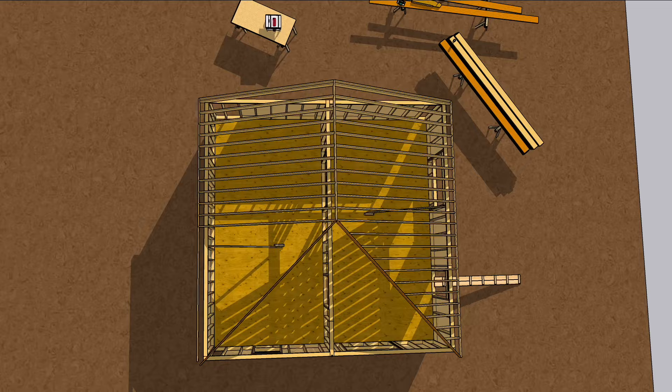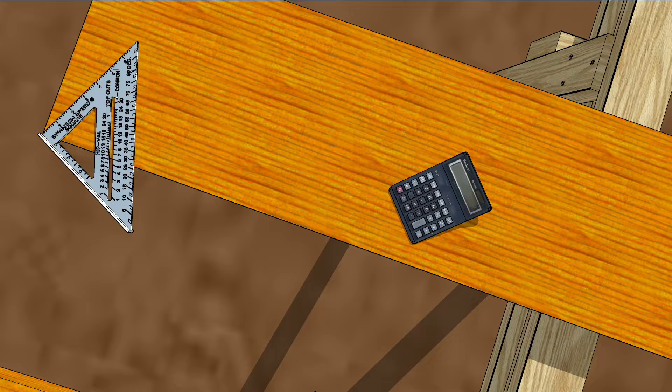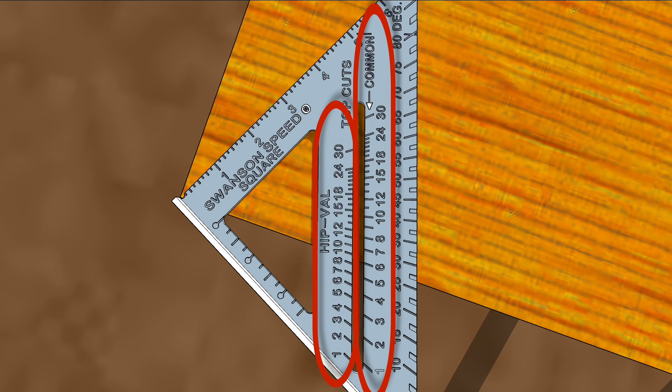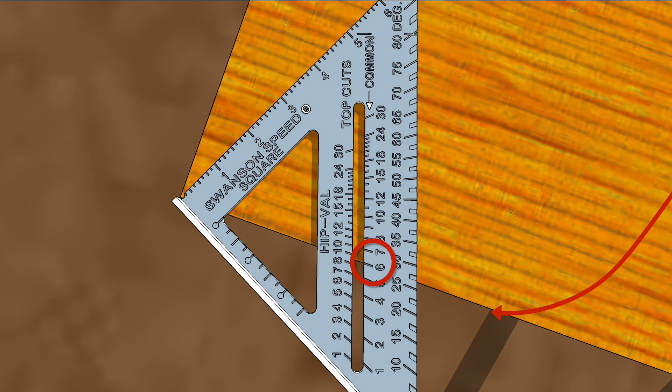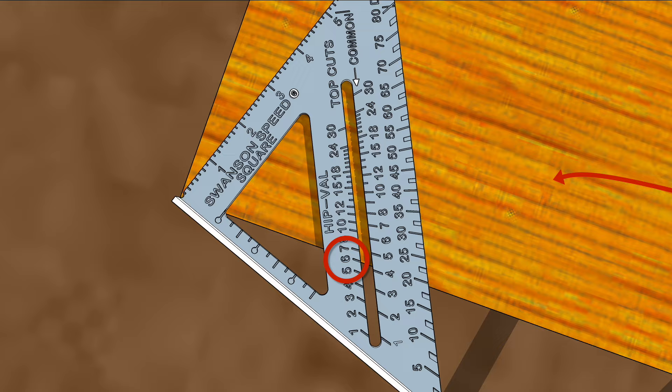You can determine the hip pitch by looking at your speed square or calculating it on a construction calculator. There are two scales on a speed square: commons and hip-val, which means hips and valleys. A 6/12 on a common scale is a little under 27 degrees, while a 6/12 on a hip-val scale is a little under 20 degrees.